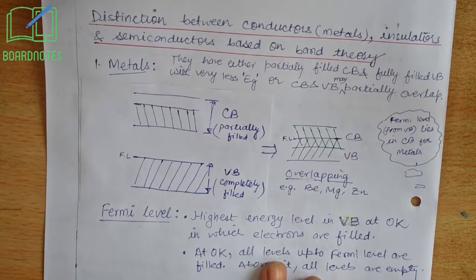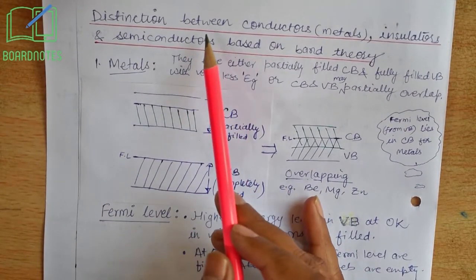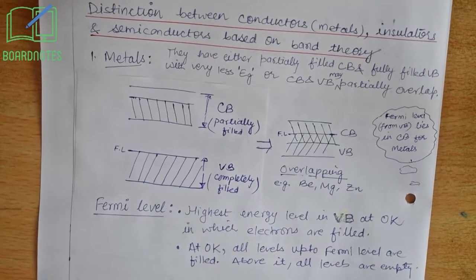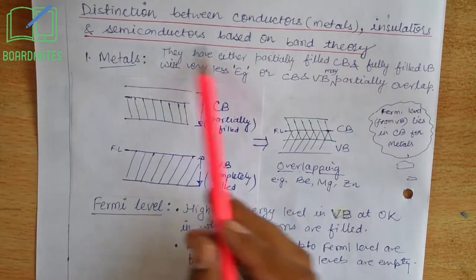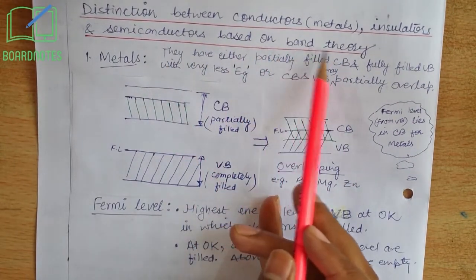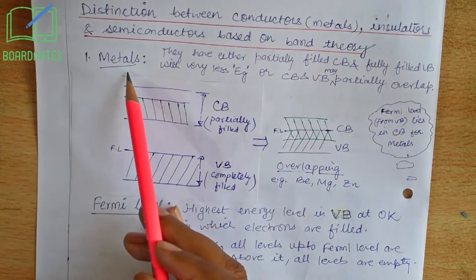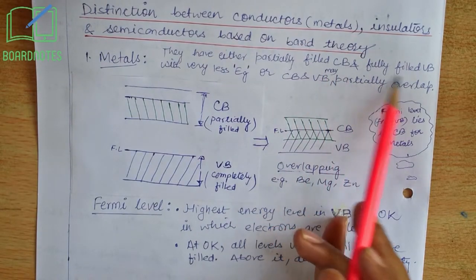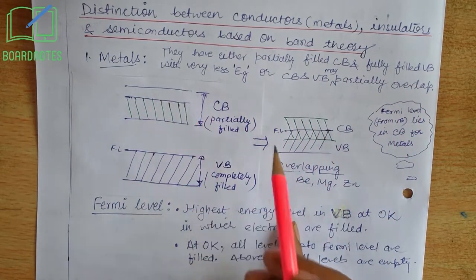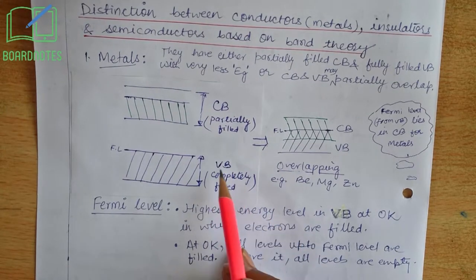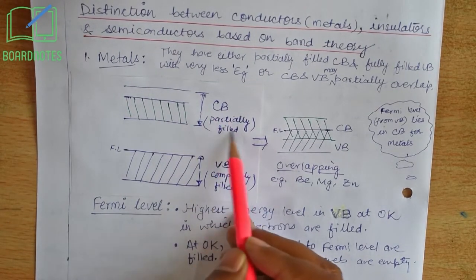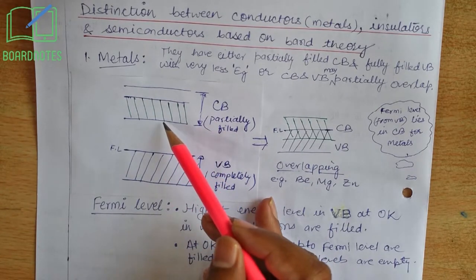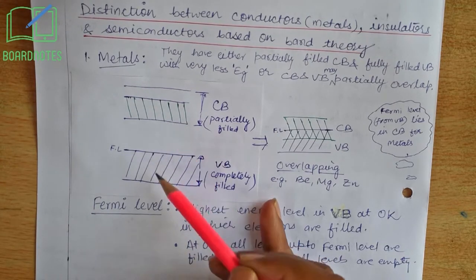Now let us see the distinction — that is, how we can differentiate between conductors (metals), insulators, and semiconductors based on band theory. First, we talk of metals. Metals have a partially filled conduction band and a fully filled valence band. The valence band is completely filled and the conduction band is partially filled. The energy gap between them is absent.